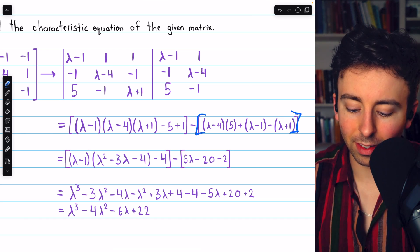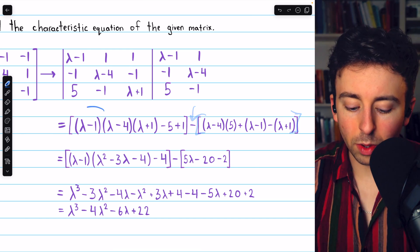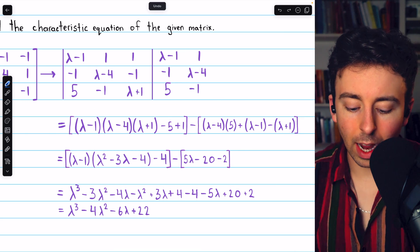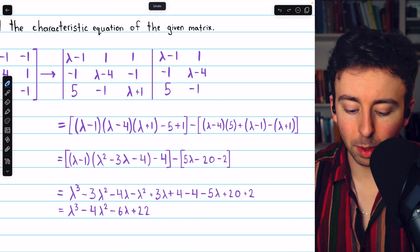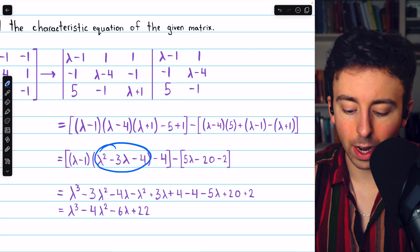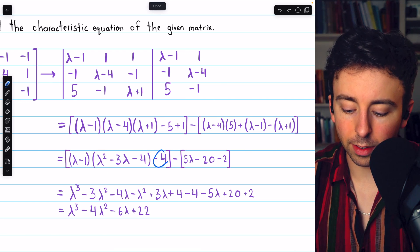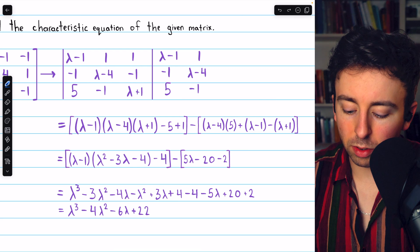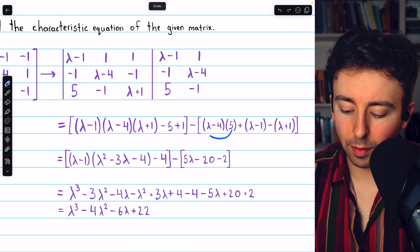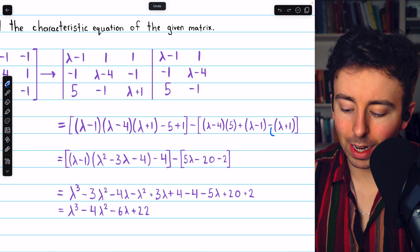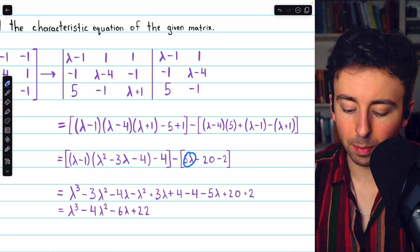So all of this is being subtracted. So that's our determinant. Now we just have to expand and simplify. Lambda minus 4 times lambda plus 1 gives us this quadratic. Negative 5 plus 1 is negative 4. And then we do some expanding and combining like terms over here. 5 lambda plus lambda minus lambda is just 5 lambda.